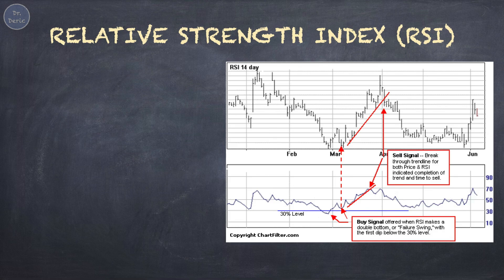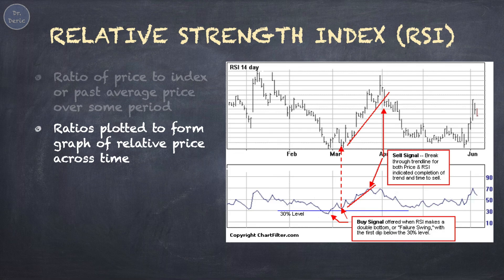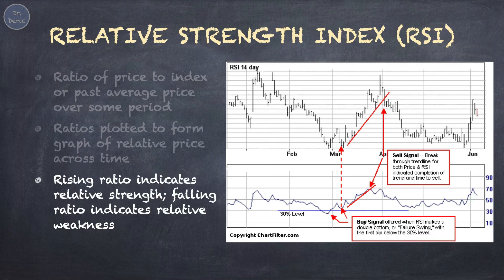Another indicator is the Relative Strength Index, RSI. This is to measure the magnitude of recent price changes to evaluate overbought or oversold conditions in the stock price. It is in fact the ratio of price to index, or past average price over some period. Ratios are plotted to form a graph of relative price across time. A rising ratio indicates relative strength, while a falling ratio indicates relative weakness. If RSI is below 30%, it provides a buy signal to investors, which means the stocks are oversold and it is cheap now. Investors should buy when the price is low. However, if the RSI is above 70%, it is a sell signal to investors. Most likely the stocks are overbought and it is too expensive now. Investors should sell the stocks, as the stock price may fall in the future.